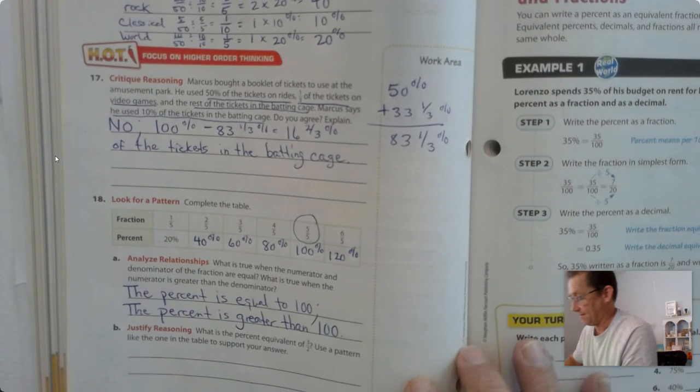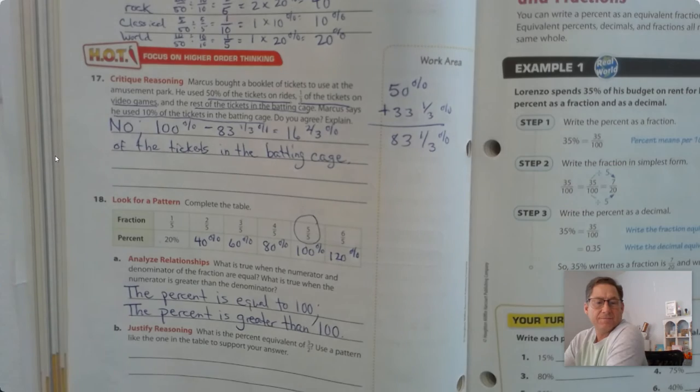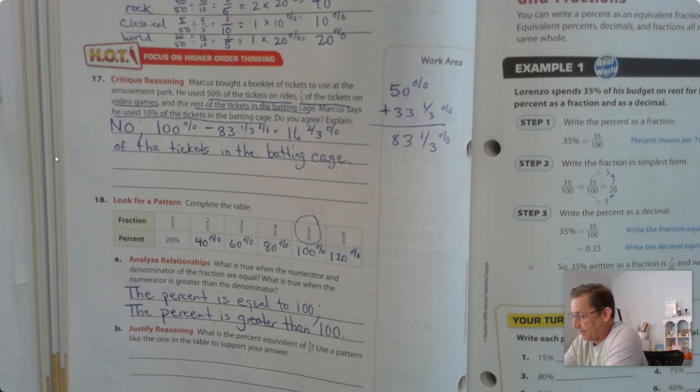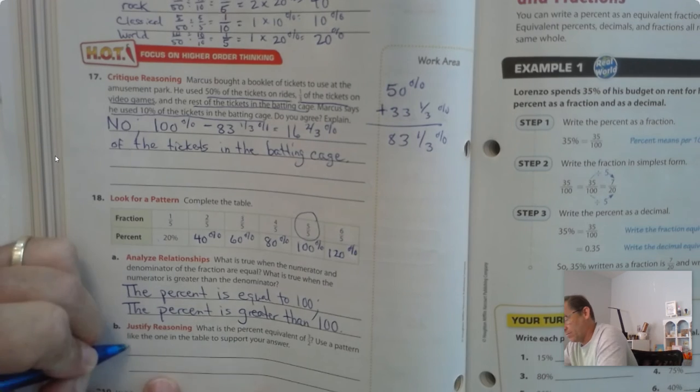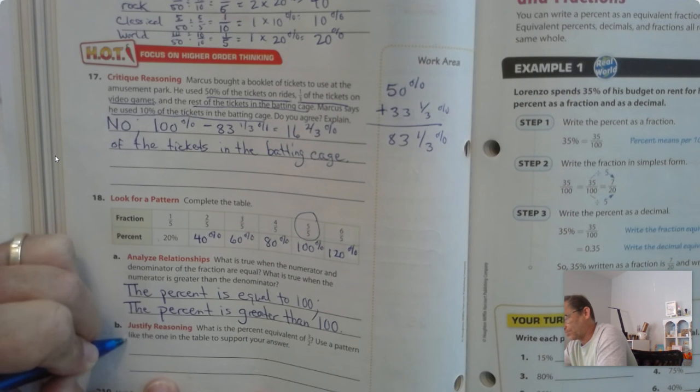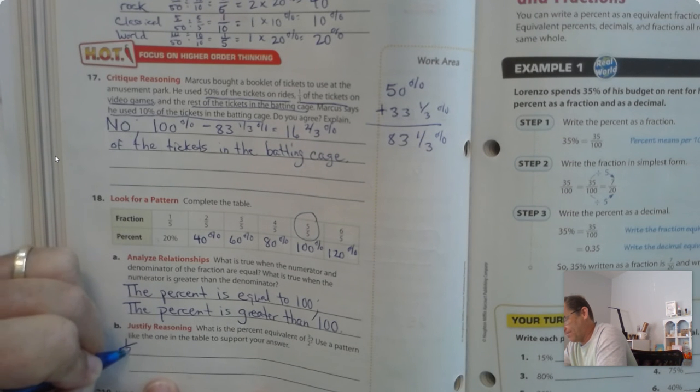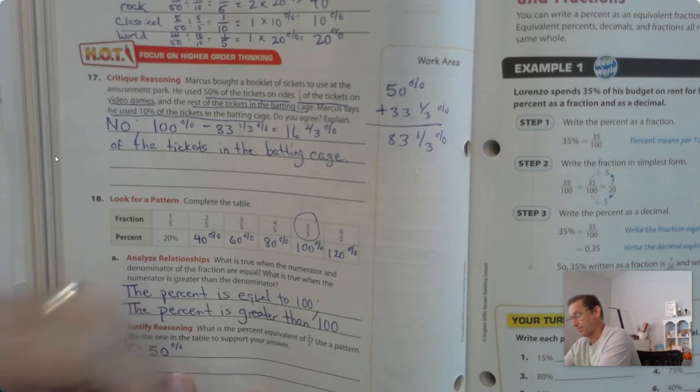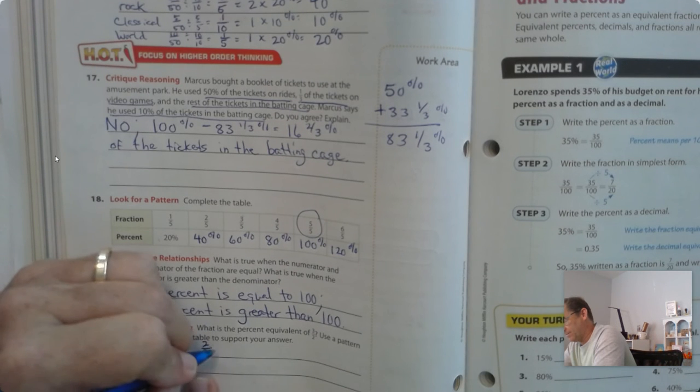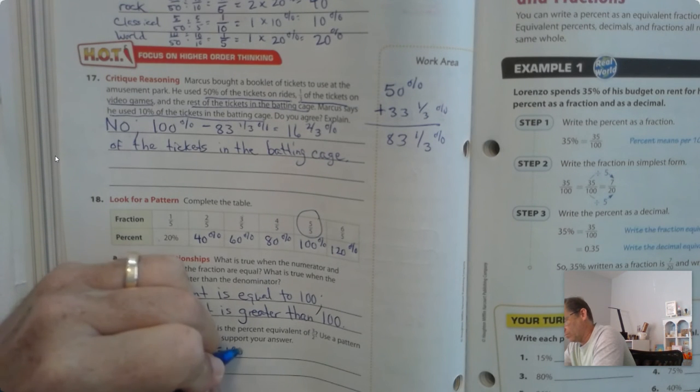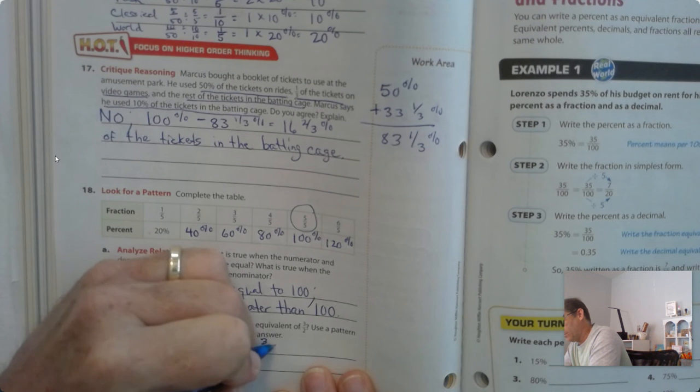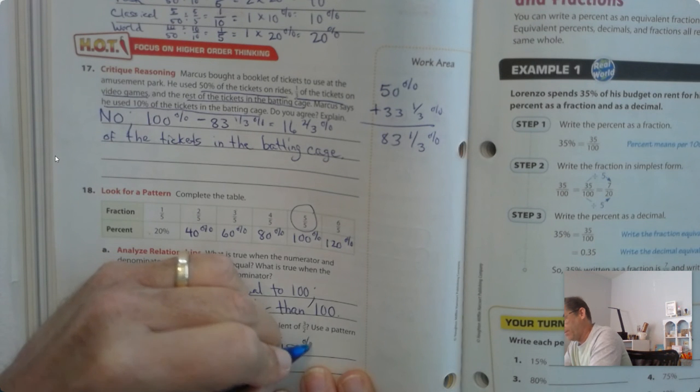And 18b. What is the percent equivalent to three-halves? Use a pattern, like the one in the table to support your answer. Okay, well, one-half is equal to 50%. Two-halves would equal 100%. Three-halves would equal 150%.